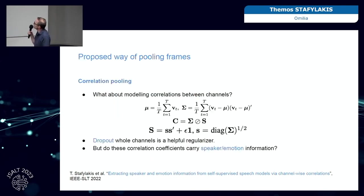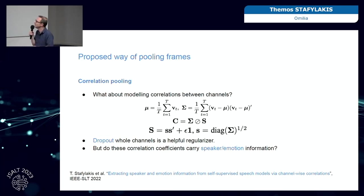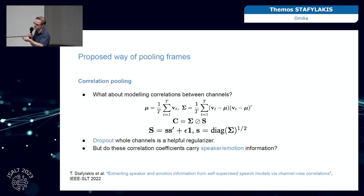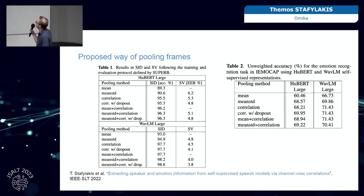Maybe we can do something better than just first and second order statistics. We came up with correlation pooling, where you essentially estimate the correlation between the coefficients — nothing more than evaluating the correlation matrix. It can be a big matrix, but you first reduce the number of channels, diagonalize it, vectorize the correlation, and then add one more linear layer to bring it to 256 dimensions. We tried that and it was quite successful — in all three cases it went really well, especially in the speaker tasks.